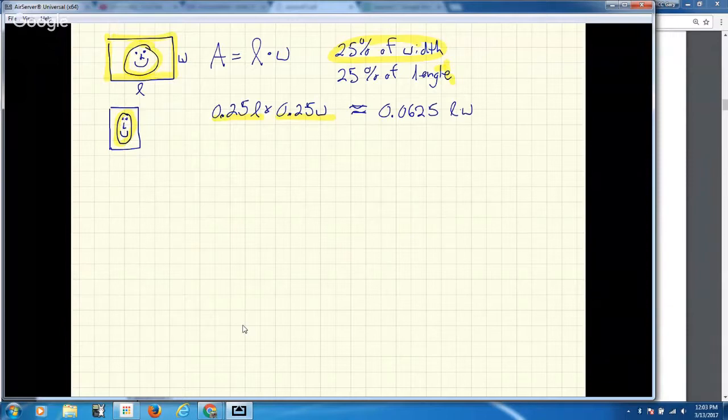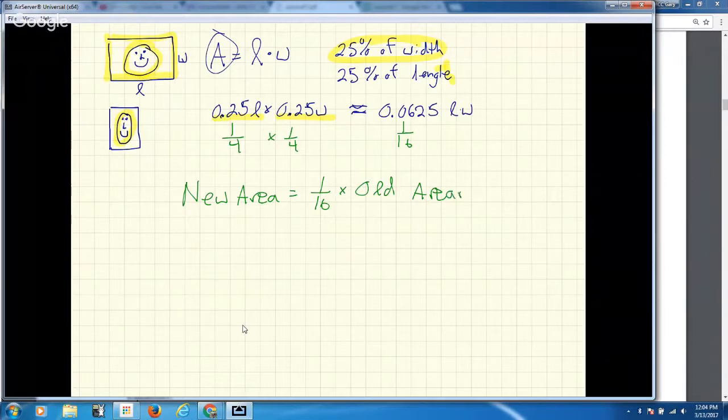Keep in mind, length times width is area. So when we take 25% of each dimension, the length and the width, keep in mind the fractions. This means I have 1 quarter times 1 quarter, which makes this 1 sixteenth. I end up with a new area that's equal to 1 sixteenth of the old area. This ends up giving me a quadratic equation. The 1 sixteenth came from 1 fourth times 1 fourth. So essentially what I have there is 1 fourth squared times the old area.